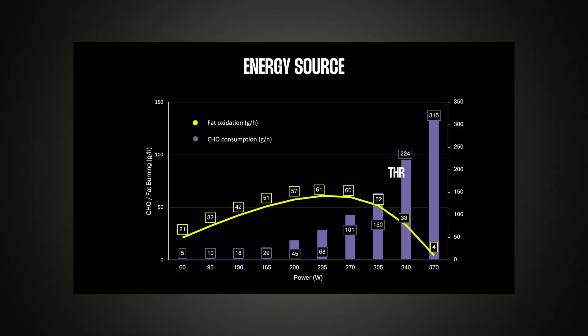In summary, VO2max helps you utilize more oxygen, which improves fat metabolism. Increased fat metabolism conserves carbohydrates, allowing you to cycle for longer durations. The next important parameter we'll examine is the percentage utilization of your VO2max.